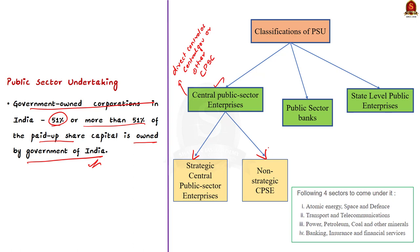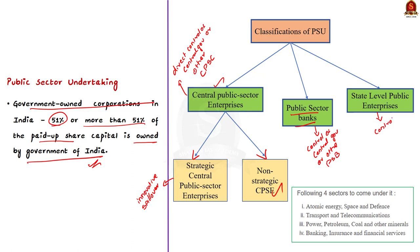An industry is considered strategic if it has large innovative spillovers and provides substantial infrastructure for other firms in the same or related industries. The rest are regarded as non-strategic CPSEs. The second category is Public Sector Banks — under direct control of the central government or other PSBs by 51 percent or more capital share ownership. The third category is State Level Public Enterprises — under direct control of the state government or other state-level public enterprises by 51 percent or more.